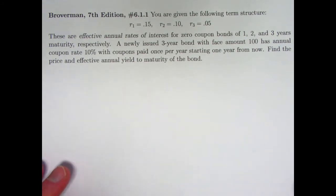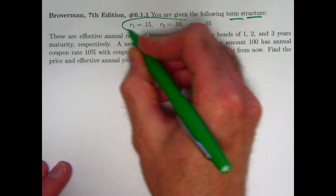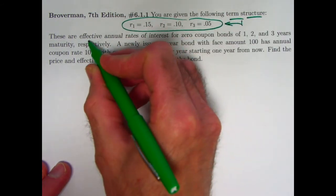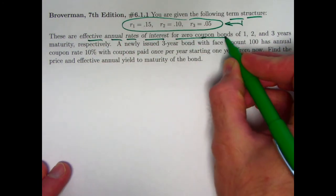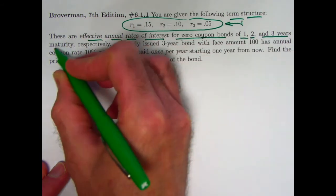So here's the problem statement. You are given the following term structure. This whole thing here represents what's called the term structure. These numbers represent effective annual rates of interest for zero-coupon bonds of different maturities of one, two, and three years maturity, respectively.